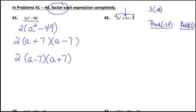The numbers have to be different in sign — one positive, one negative. The bigger number has to be positive because they have to add to be a positive 2. If you see right away that 6 times 4 are the two numbers that multiply to be negative 24, and 6 and negative 4 add to be 2, then you're good to go.